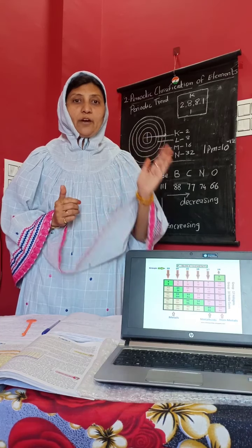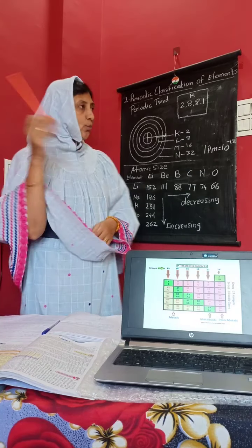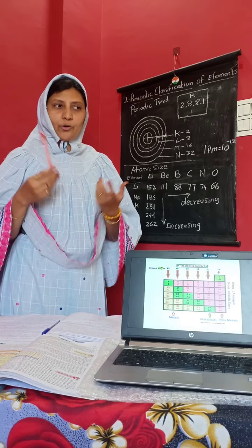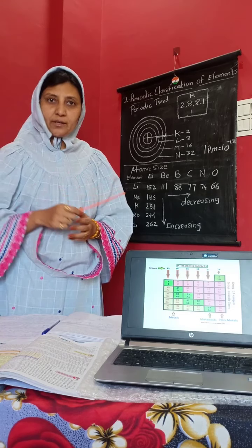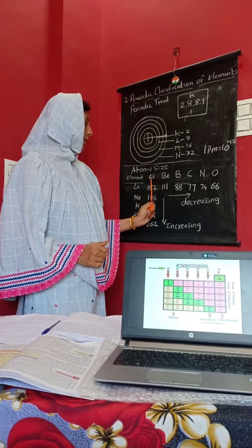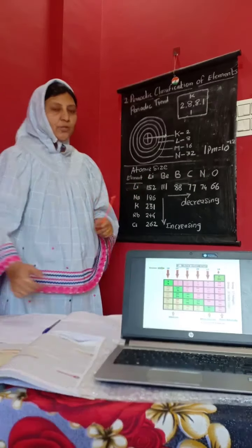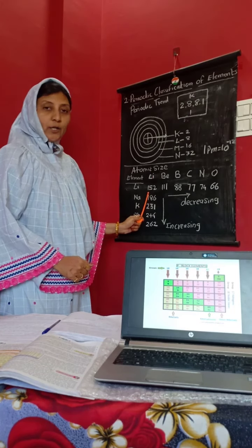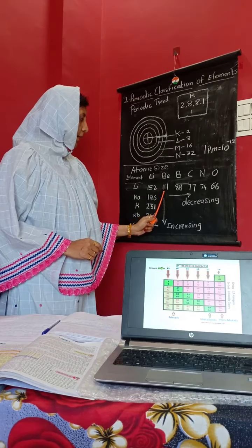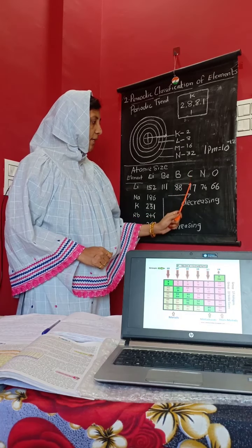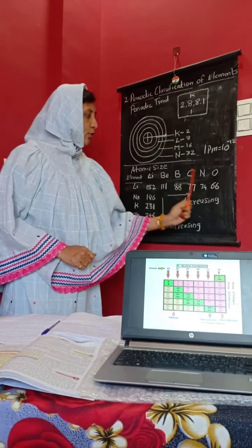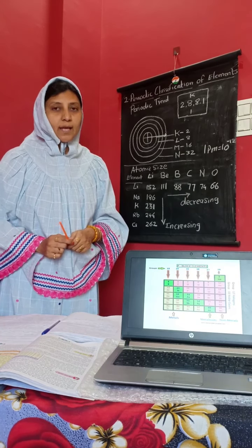Now let's see how atomic size varies in the periodic table. Taking one period as an example — lithium has an atomic radius of 152 pm, beryllium 111, boron 88, carbon 77, nitrogen 74, and oxygen 66. From left to right, the numbers are going on decreasing. So the atomic radius decreases from left to right.